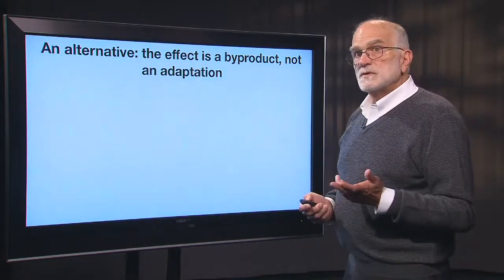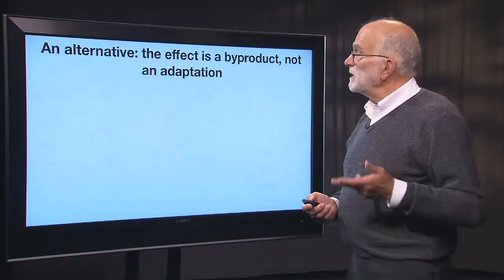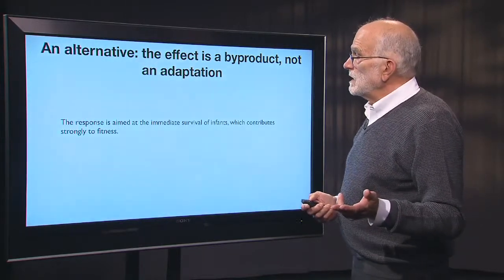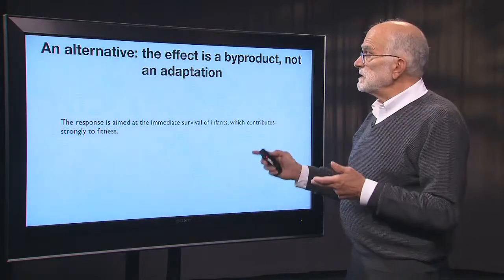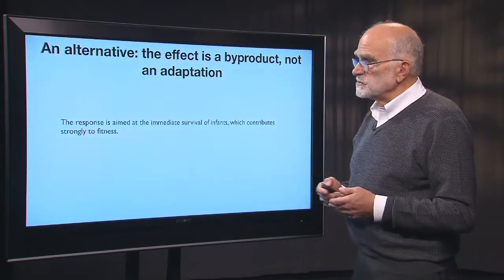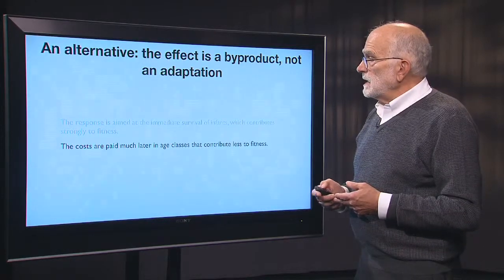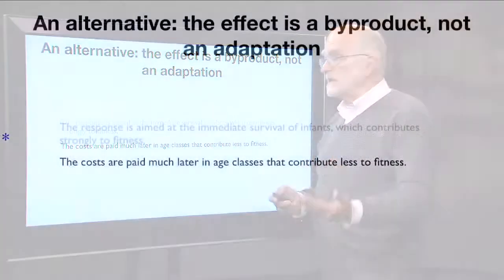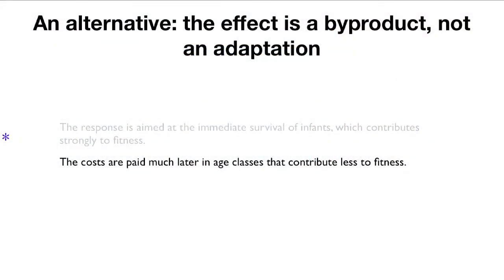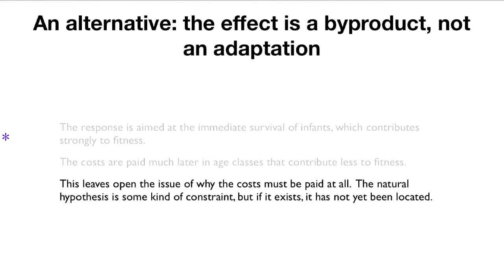There is an alternative to this way of thinking: that these are byproducts and not adaptations. The claim would be that the response we see is aimed at the immediate survival of the infant, which contributes strongly to fitness, and that it is worth paying a cost because those costs are delayed and discounted — older age classes contribute less to fitness than younger ones. This critique leaves open the issue of why the costs have to be paid at all; the natural hypothesis is some kind of constraint, but it hasn't been located yet.